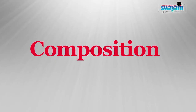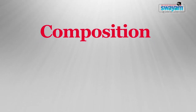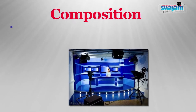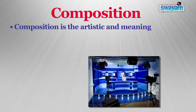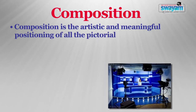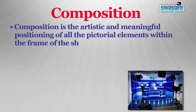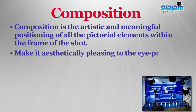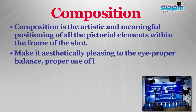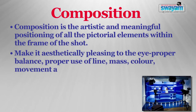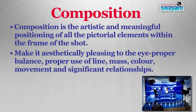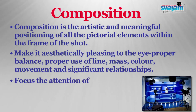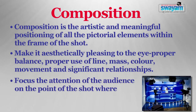The third thing is composition. Composition is basically the artistic and meaningful positioning of all the pictorial elements within the frame of a shot. It should be aesthetically pleasing to the eye, with proper balance, proper use of line, mass, color and movement, and should visually provide dramatic emphasis, significant relationships, the mood and the meaning of the scene. An important function of composition is to focus the attention of the audience to the point of the shot where we desire emphasis.